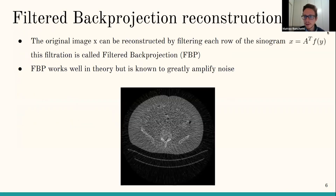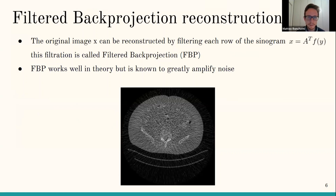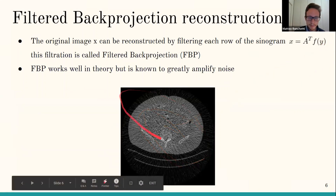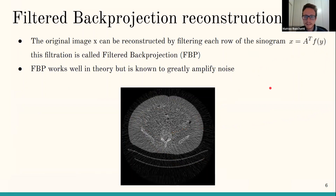In theory, there is a very good algorithm for tomography reconstruction called filtered back projection (FBP), which in an ideal setting reconstructs the original signal perfectly. However, it is very sensitive to noise because it amplifies high-frequency detail. The idea is to take each line of the sinogram, apply a linear filtration, and then use back projection to get an image.